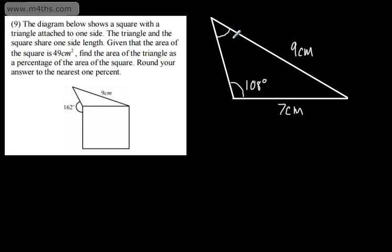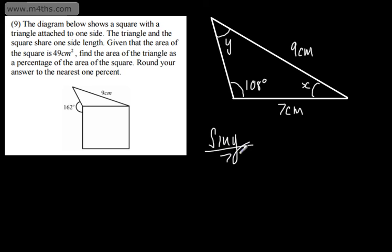So what I'm going to do is call this angle right here angle Y, and call this angle X. Using the sine rule to find angle Y, we can say sine Y over 7 equals sine of 108 over 9.